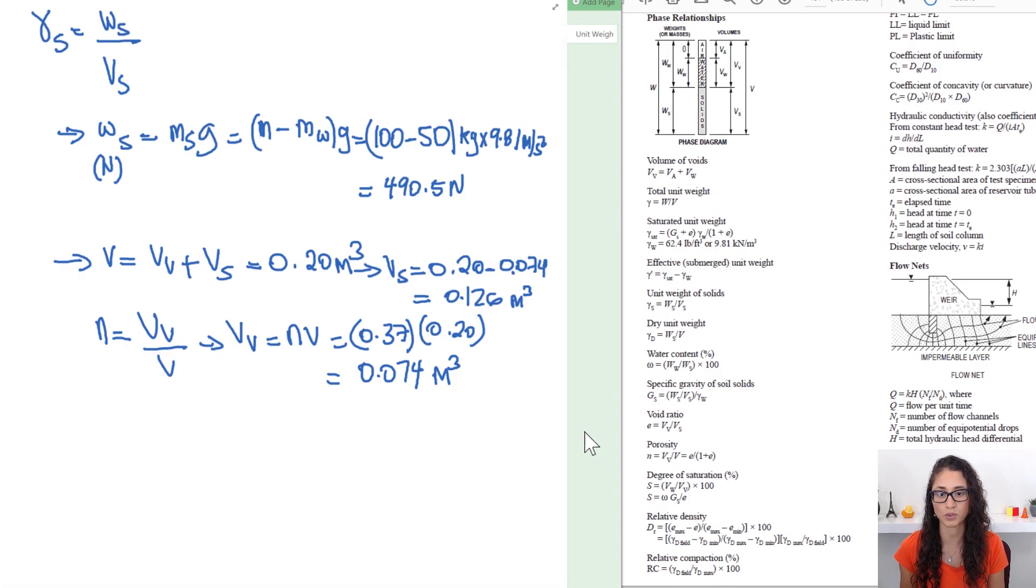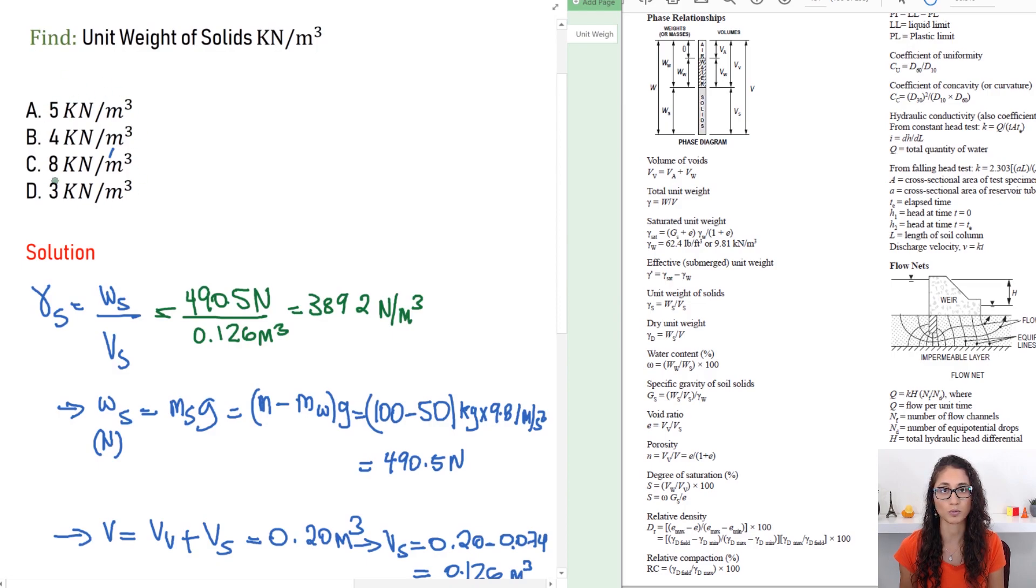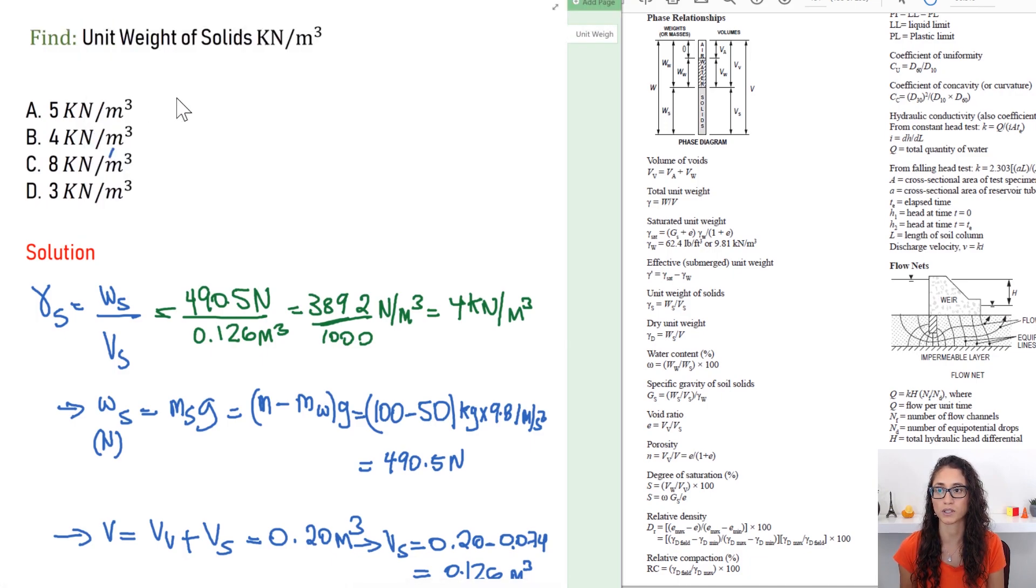Okay, so now that we calculated everything, we can just go back to the equation and just replace the terms. So let me do it in a different color. Let's pick green. So we have the weight of the solid is 490.5 newtons, divide that by Vs which is 0.126 cubic meters. This should give you an answer of 3,892 newtons per cubic meter. Now note that the answer, the multiple choice, is kilonewtons per cubic meter. So what you have to do is just divide this by a thousand to get kilonewtons. So this will give you an answer of 4 kilonewtons per cubic meter. So your answer is going to be B.